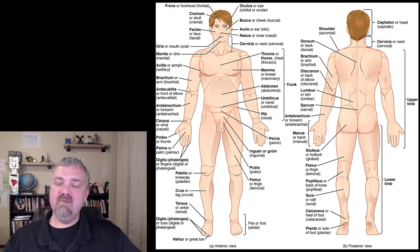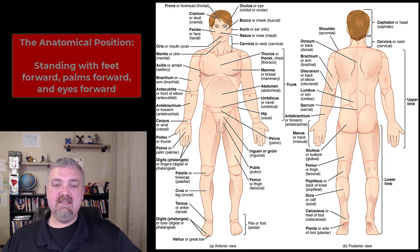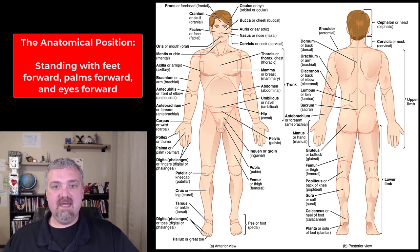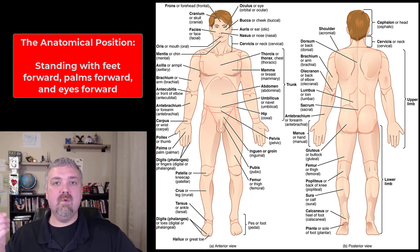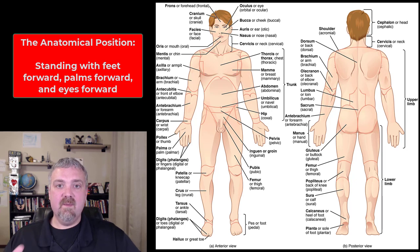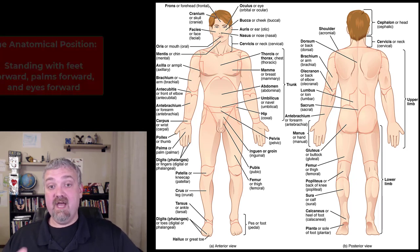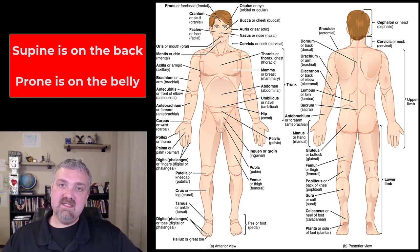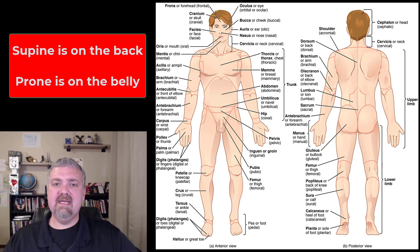Before we dive in, I will zoom in so you can see things better. This guy is standing in the anatomical position — that means he's standing erect, everything is facing forward, feet forward, palms of his hands are forward, eyes facing forward. Unless you're told otherwise, someone is in the anatomical position. Now, if he was laying on his back, he'd be supine — supine, on your spine. If he was laying on his stomach, he'd be prone.